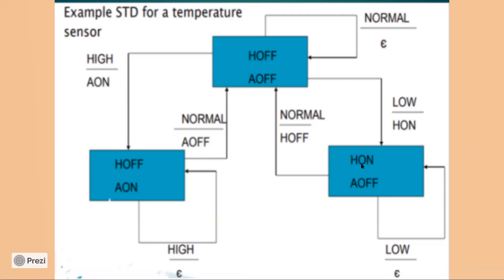When AC is off and temperature is normal, I stay in the off state. When the temperature is low, I transition to the heater-on state and perform the heater on action. If I am in the heater-on state with AC off and temperature remains low, I keep the heater on and loop back to that same state.